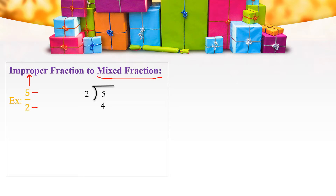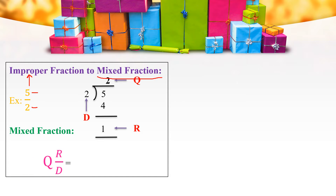Write 4 below 5 and write 2 in the quotient place. Now subtract 5 and 4, which gives 1. So 2 is the quotient, 1 is the remainder, and 2 is the divisor. To write a Mixed Fraction, we have the general format: quotient, remainder divided by divisor. In our example, the quotient is 2, the remainder is 1, and the divisor is 2. Therefore, 2 and 1 by 2 is the Mixed Fraction. So, 5 by 2 equals 2 and 1 by 2.